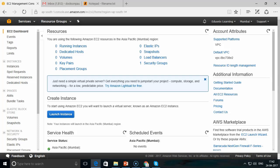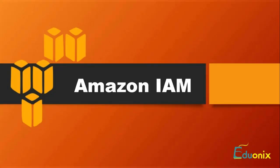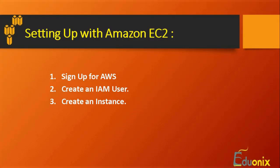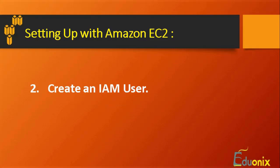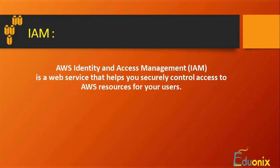In our previous session we discussed how to sign up with your AWS account. To set up EC2 we follow three steps: we completed signing up, and now in the second step we are creating an IAM user. An IAM user is an authenticated user who can access the particular instances we create - we need to define IAM security to authenticate and permit that user.